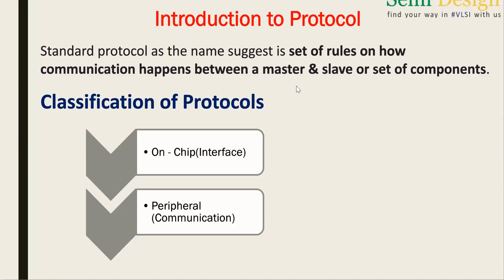Coming to the peripheral protocol - peripheral protocol is nothing but it is used for communication between some logic on the chip to an external device. Whatever logic is there on the chip, communicating to an external device - that is nothing but peripheral. Examples include PCI bus protocol, DDR bus protocol, or APB protocol, which is a parallel communication. These types of protocols are used in the peripheral.